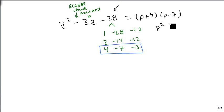We check our answer again by putting P squared minus 7P plus 4P minus 28. When we combine like terms, we're back to our original.